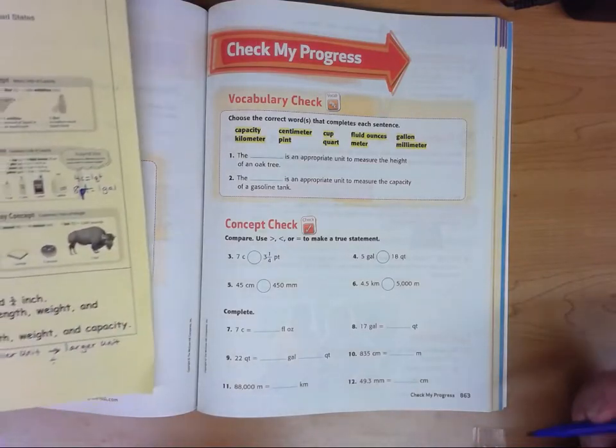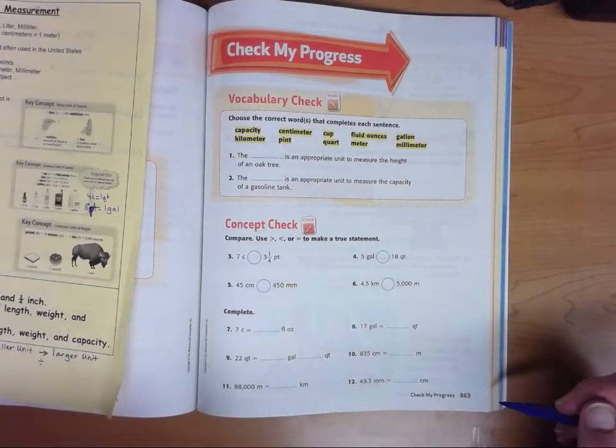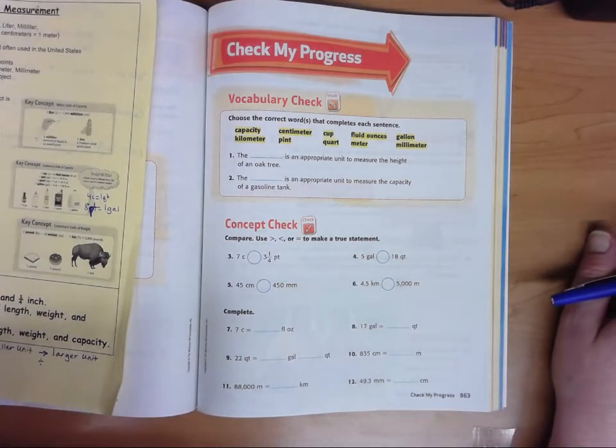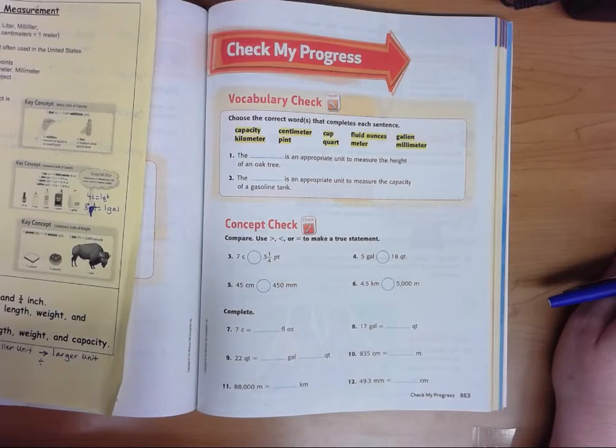Let's take a look here at page 863. This is a check my progress. Open up to page 863. We're going to work through the check my progress. Please write down anything that I write down as we go through this.